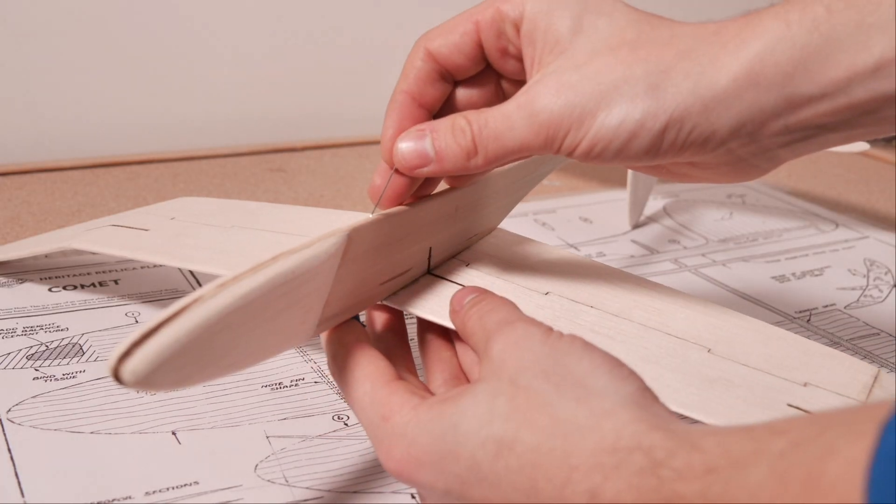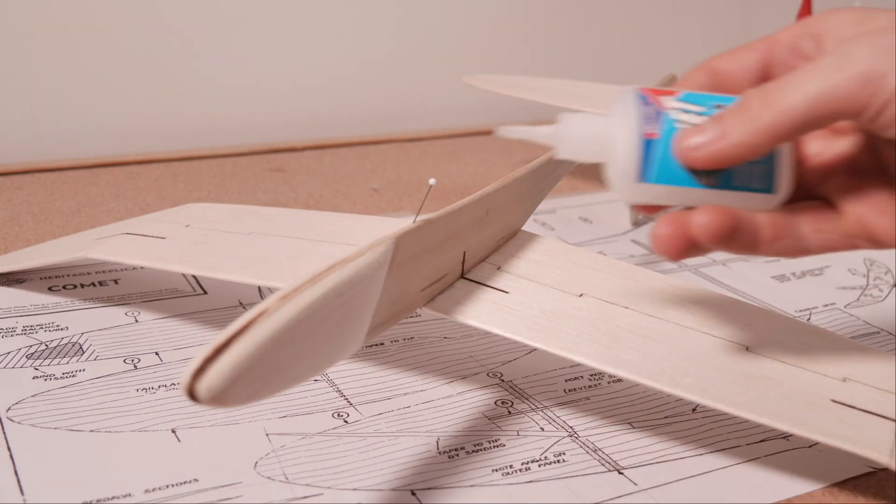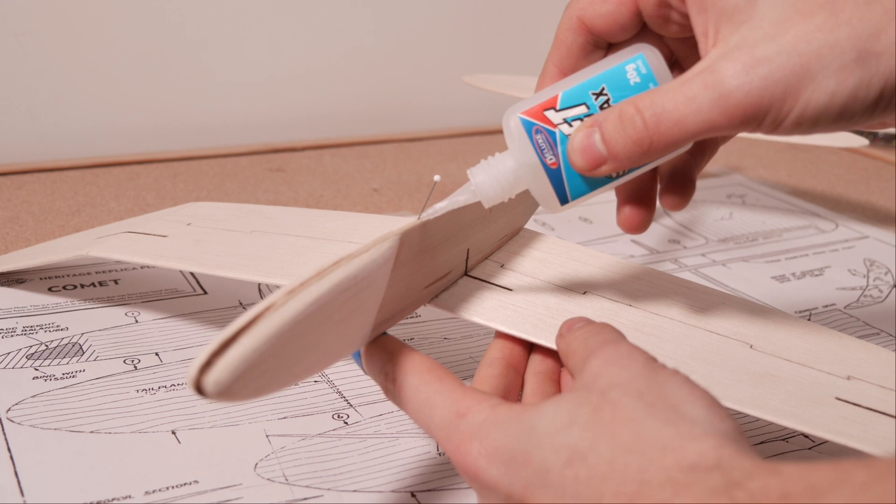If you want to launch the plane from a bungee, catapult or tow aircraft, you can make a hook from the wire included in the kit or simply a spare pin found lying around.